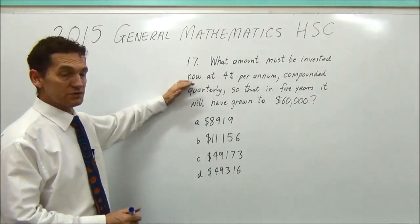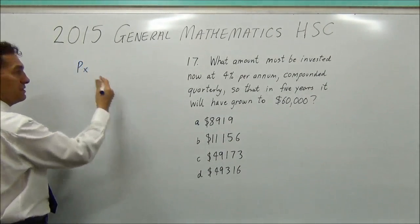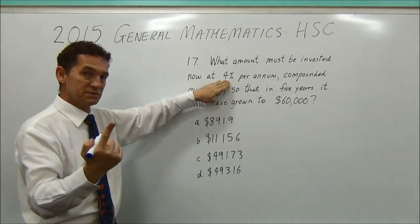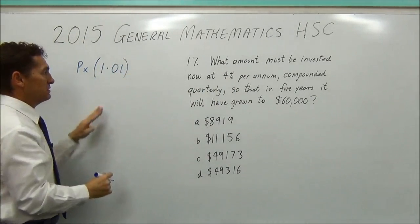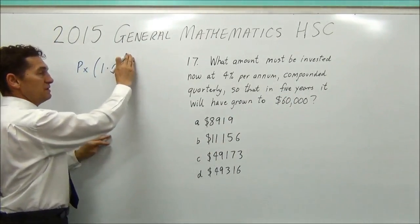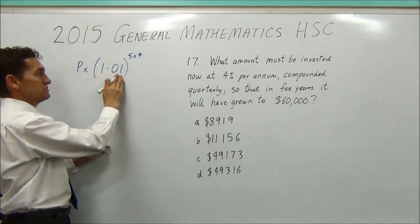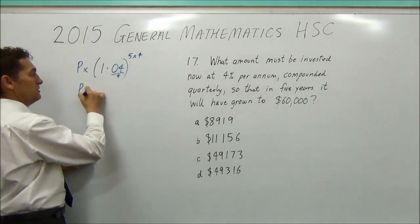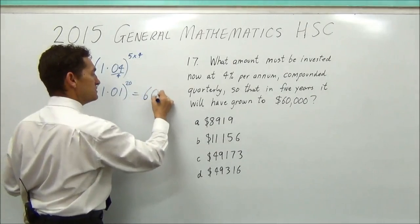So very simply using the compound interest formula, you want some amount to be invested multiplied by an interest rate. Now you want to increase it by 4% compounded quarterly. So 4% in a whole year is 1% in a quarter. So you want to increase it by 1.01. And you want to go for five years. So normally you'd put a 5 up here, but we're doing it every quarter. So instead of 5, you're doing 5 times 4 which is 20. So you're really doing P multiplied by 1.01 to the power of 20, and that's going to equal $60,000.